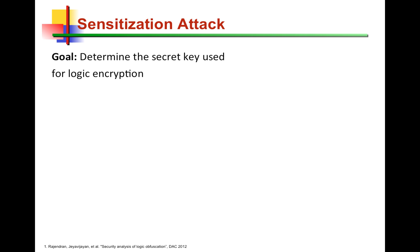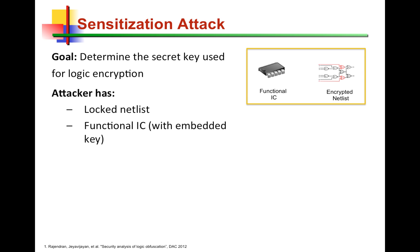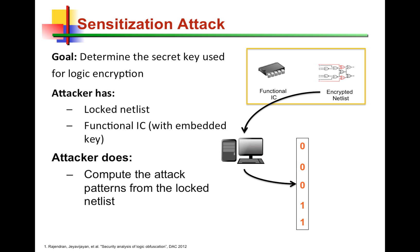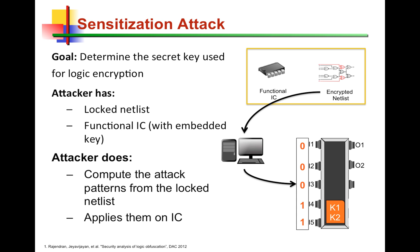In a sensitization attack, and in any attack on logic locking for that matter, the goal is to extract the secret key — to figure out what the secret key is. In the threat model defined in this earlier work, which pretty much all subsequent attacks follow, the attacker is assumed to have access to a locked netlist obtained by reverse engineering a functional chip, as well as the functional chip itself, which embeds the logic locking key in its secure tamper-proof memory. This chip is used as an oracle by the attacker, who applies simulation tools on the encrypted netlist, produces input patterns, and applies these input patterns to the oracle to sensitize the key bits to the outputs.